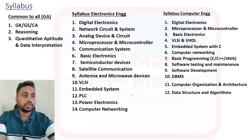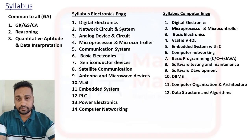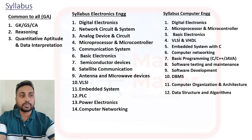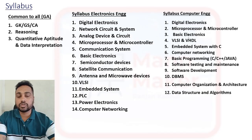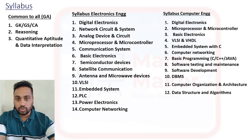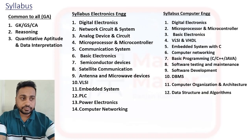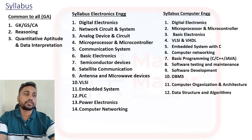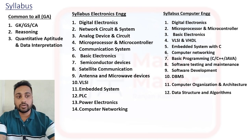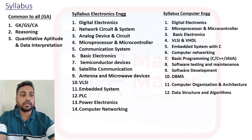Regarding the syllabus, I have noted the subject names — in the eBook you will get detailed syllabus topics. For example, under Digital Electronics, what you need to prepare; under Basic Electronics, what you need to prepare. In Computer Science, you will see some Electronics subjects as well, because this is a BL role tied to Electronics. You may have already studied these in your B.Tech. The core Computer Science topics include: Computer Networking, Basic Programming, Software Testing and Maintenance, Software Development, DBMS, Computer Organization and Architecture, and Data Structures and Algorithms.